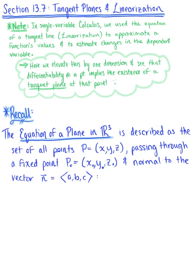In this section, we are looking at tangent planes. To begin, I want you to note or recall that in single variable calculus, we use the equation of a tangent line — also known as the linearization — to approximate a function's value and to estimate changes in the dependent variable. We are going to extend this one dimension from R2 to R3, and see that differentiability at some point on a surface implies the existence of a tangent plane at that point. So what a tangent line is to R2, a tangent plane is to R3.